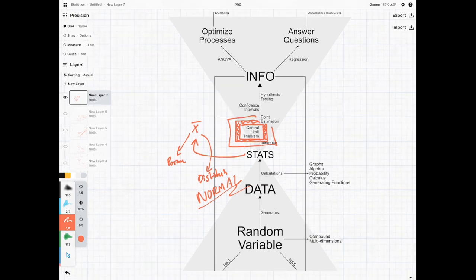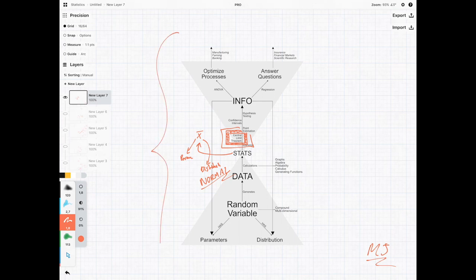But when you see the big picture of stats, the only way to optimize processes and answer questions in all these various fields is if we have information about the parameters and the distributions of our random variable that is generating data.